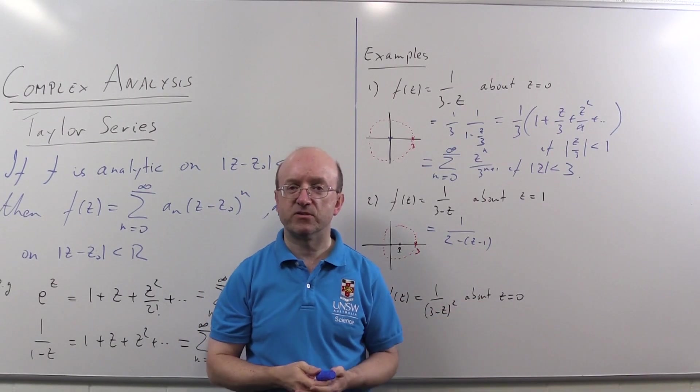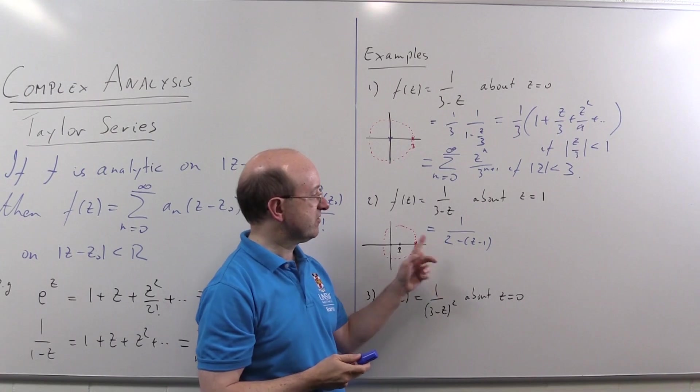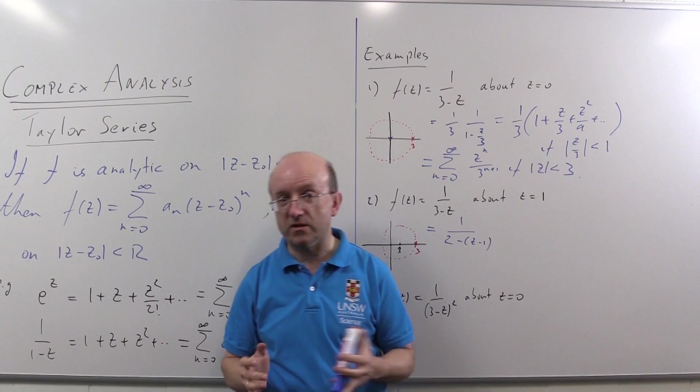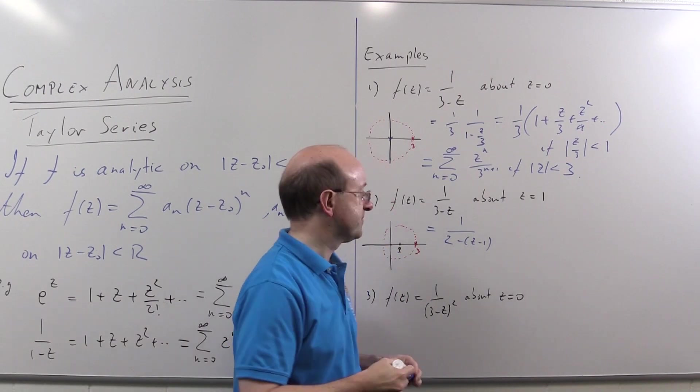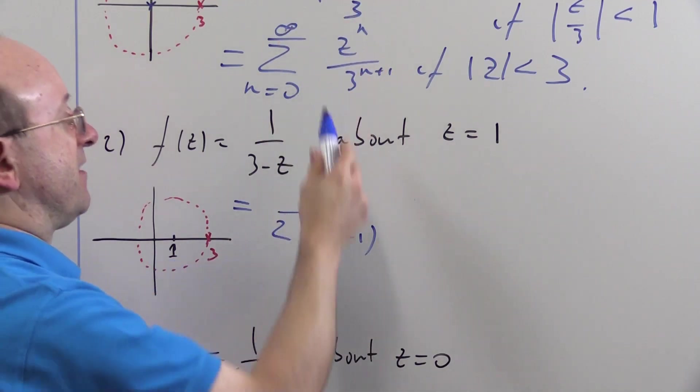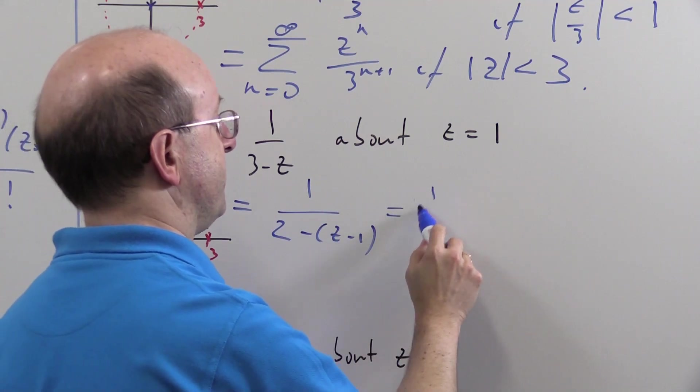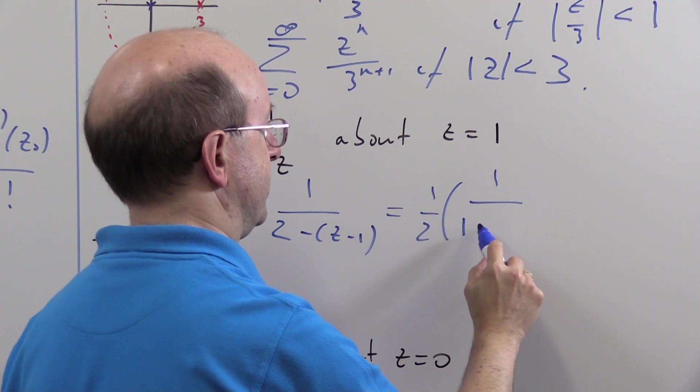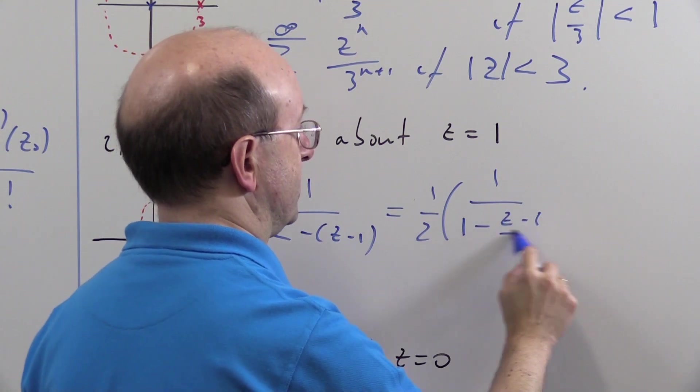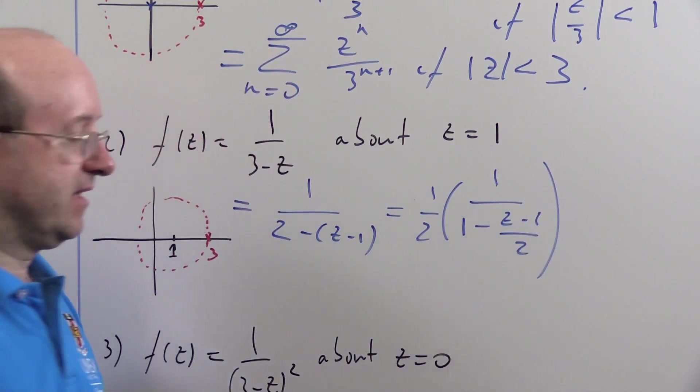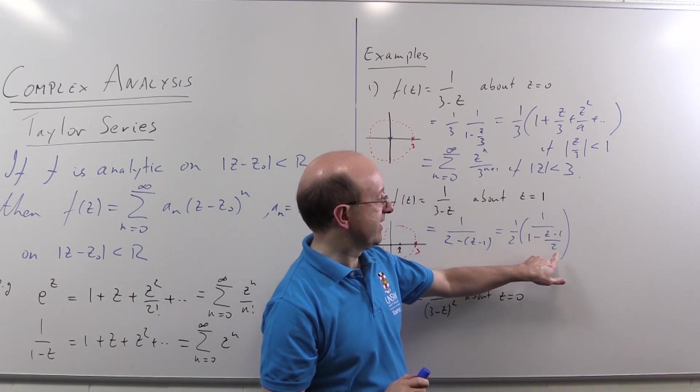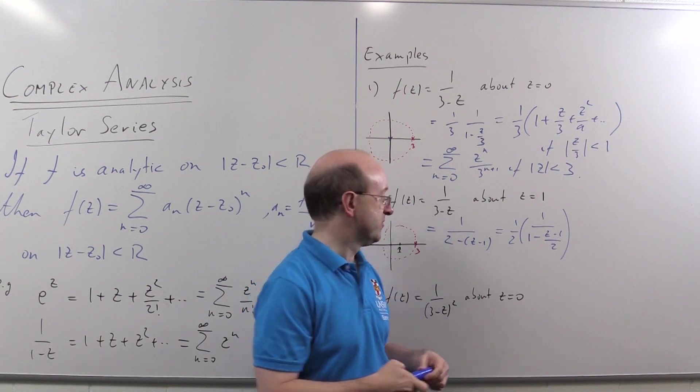And straight algebra tells you that's the same thing. Now it's still not in the right shape to apply the series because we must have a one minus something or other. So we modify what we did here. We pull out a half. And we get one half times one over one minus z minus one over two. Like that. And now we can apply our geometric series and expand in powers of z minus one over two.